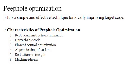Next is peephole optimization. What is peephole optimization and why we use it? It is a simple and effective technique for locally improving target code. This technique is applied to improve the performance of the target program by examining a short sequence of target instructions called the peephole, and replacing these instructions by a shorter or faster sequence whenever possible. Peephole is a small moving window on the target program.